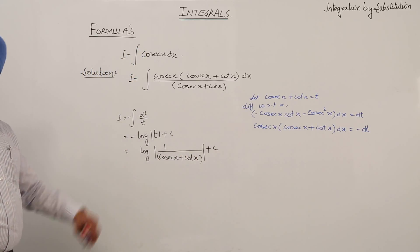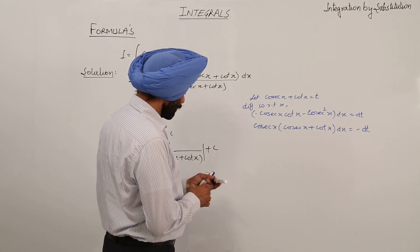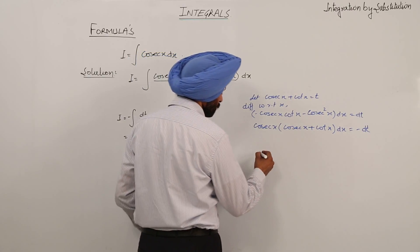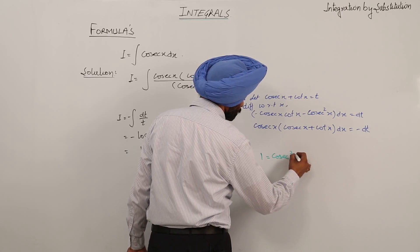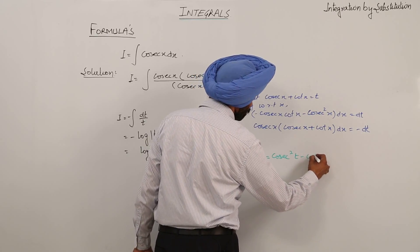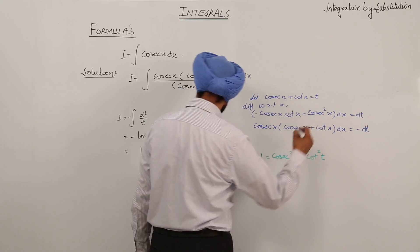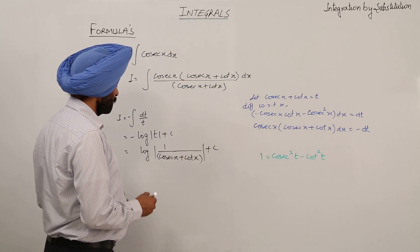Now we have a denominator here, so we are using an identity: 1 equals cosecant square t minus cot square t.